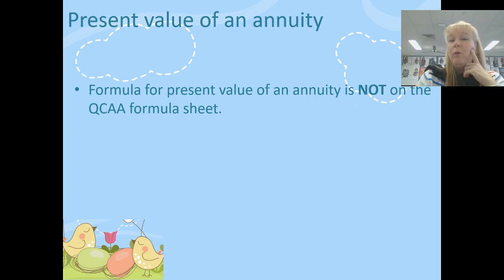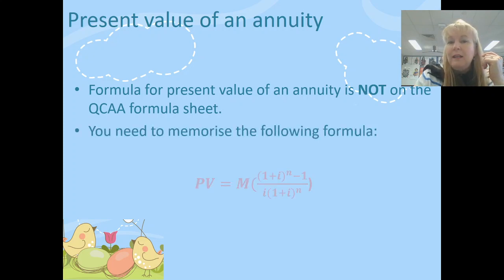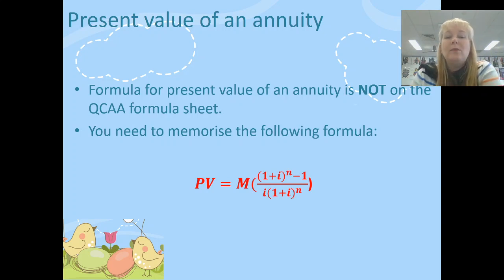So our formula for present value of an annuity is not on the QCAA formula sheet, and this will be a disappointment to most of us. However, it's not that hard to remember. Here it is. Now, some of my classes had a bit of a fright when they saw this particular formula and said, how am I supposed to remember that? That is revolting.